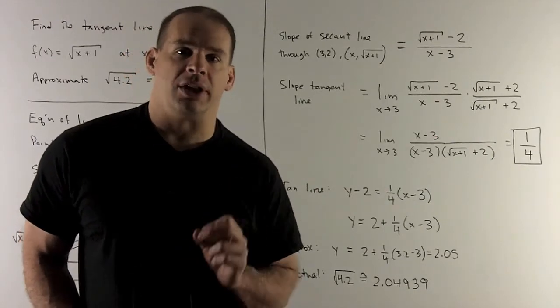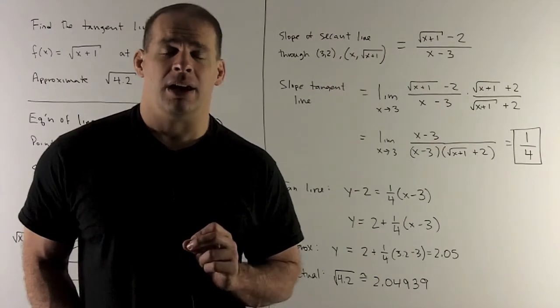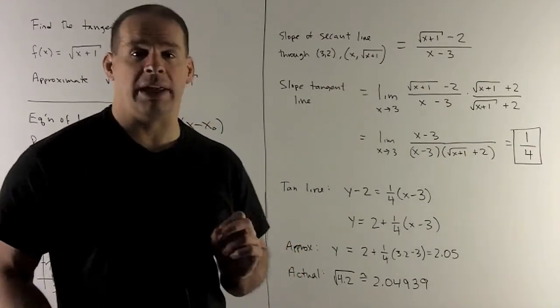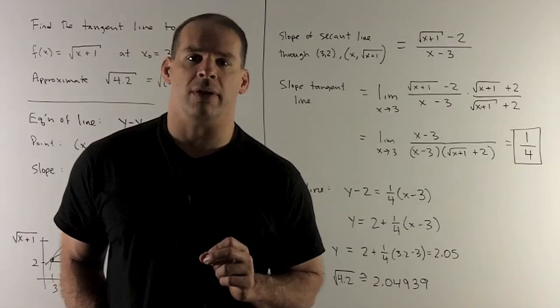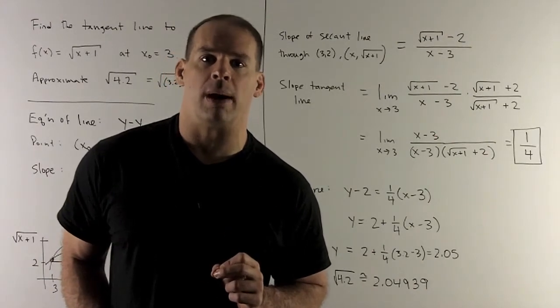I can go to my calculator to check by taking a look at the actual value. So when I do that, I'm looking at √4.2, and that's going to give me our number here, which we can see is very close to our 2.05 as promised. So that tells me I've probably worked out my problem correctly.